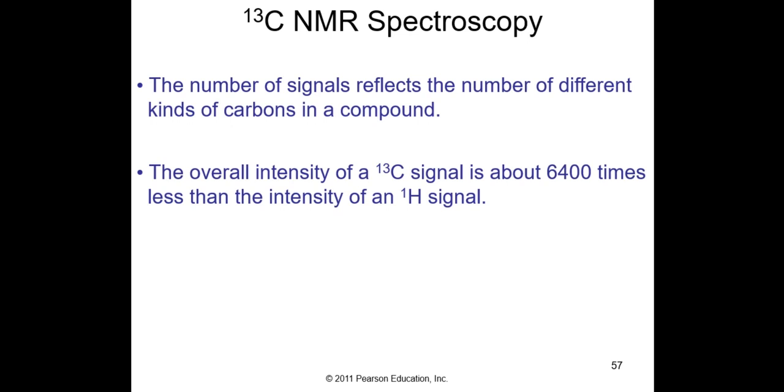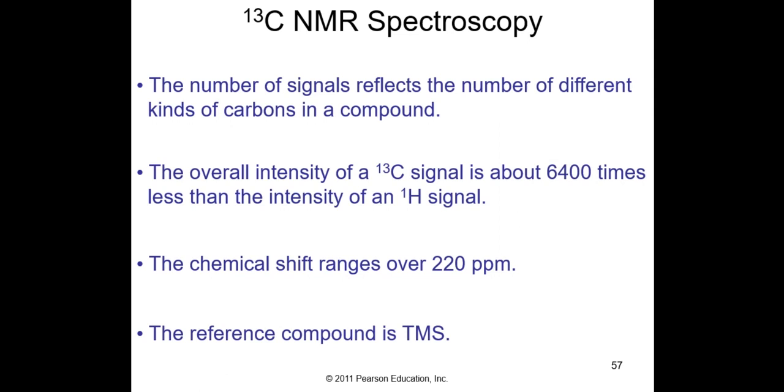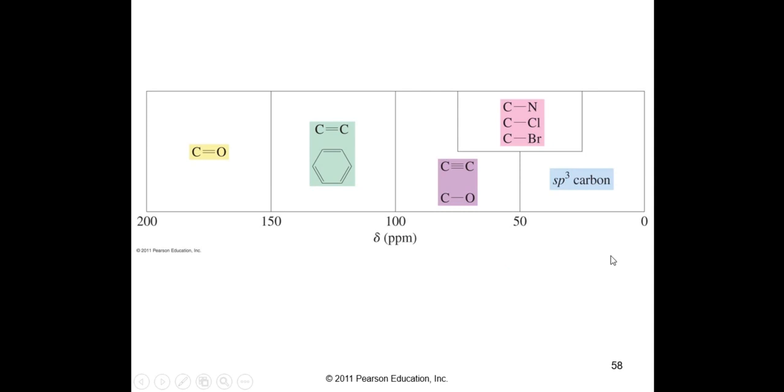The overall intensity of a C-13 signal is about 6,400 times less than the intensity of a proton signal. The chemical shift ranges don't go from 0 to 10 or 0 to 9 on a proton field. The shift range is over 220 ppm, but that's a good thing. The reference compound, again, the internal reference is TMS.